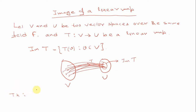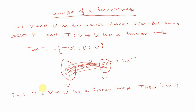This is our first theorem. It is saying that: suppose T is a linear mapping from V to U, then the image of T is a subspace of U. We are not going to prove that theorem, just stating it.